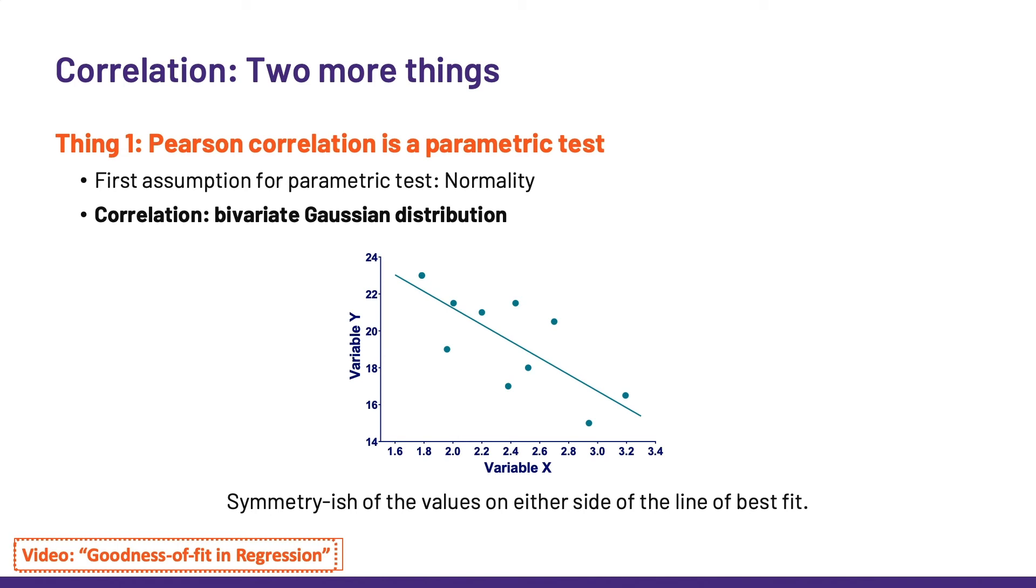We are talking about a bivariate Gaussian distribution. Bivariate, because we have two variables, x and y, and Gaussian, because of Carl Friedrich Gauss, who was the guy who first described the normal distribution. In the video on goodness of fit, I explain how to check more formally for normality.